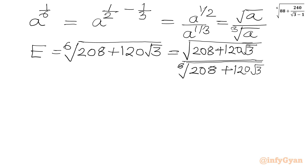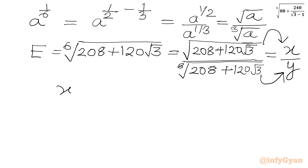I will assume the numerator is x and the denominator is y. Now we are going to calculate the square root and cube root to find the values of x and y. I will calculate x first: x = √(208 + 120√3).